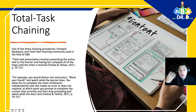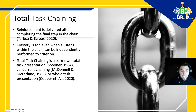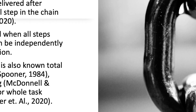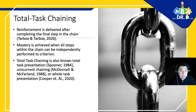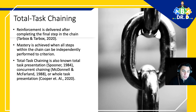When do we deliver reinforcement? Reinforcement is delivered after completing the final step in the chain. The whole aspect that comes afterwards is mastery. Mastery is achieved when all the steps within the chain can be independently performed to criterion.